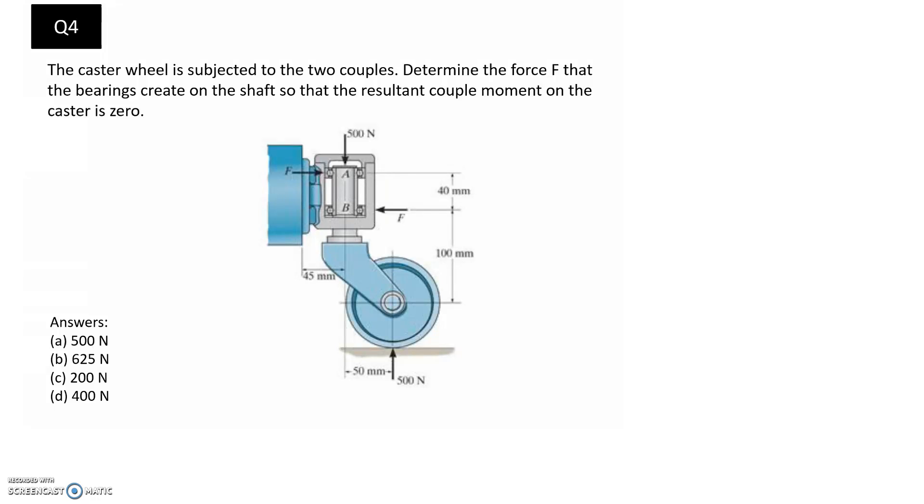So the caster wheel is subjected to the two couples. We're asked to determine the force F, which is here on the diagram, that the bearings create on the shaft, so that the resultant couple moment on the caster is zero.